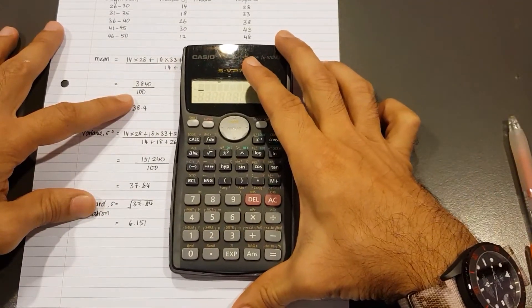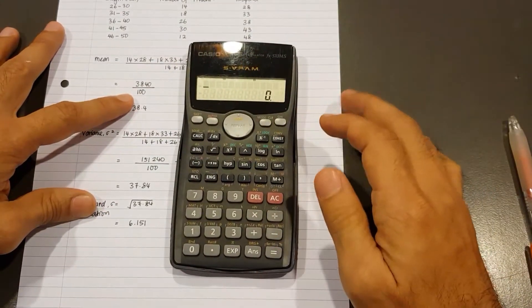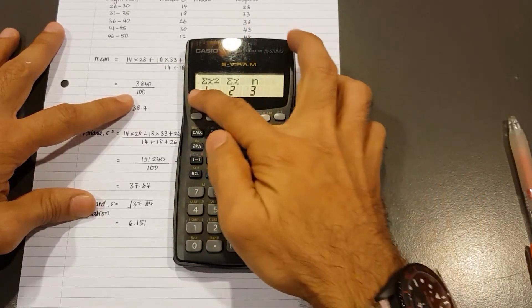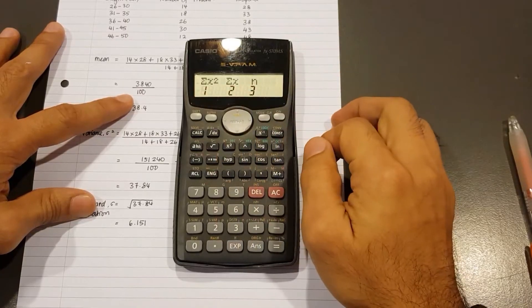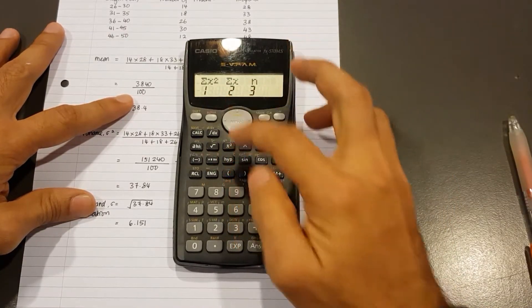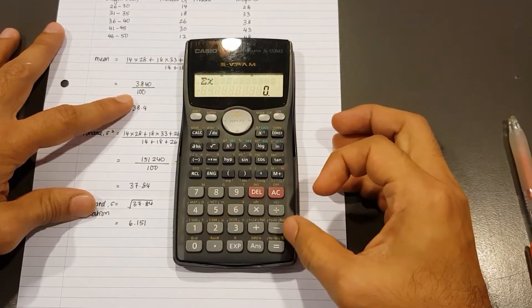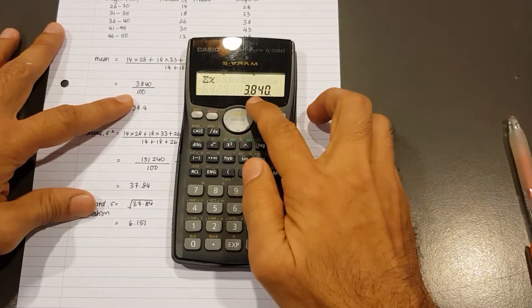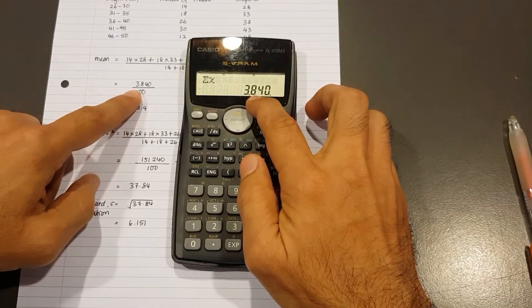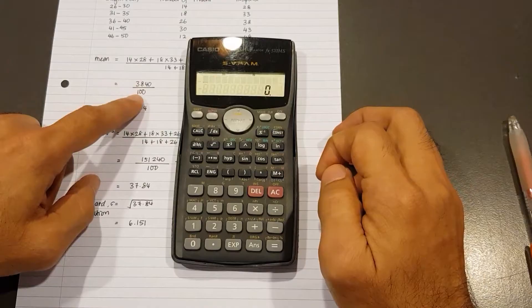So the way we do it, we find the numbers here is like this. So you press Shift and 1. That gives us the sum values. Now, for the mean, it's number 2. That's Sigma X. So I type 2 and press equal. So do you see we get 3840? That's right there. 3840. Now, just in case if you want to find the number 100,